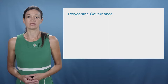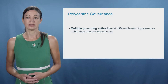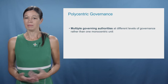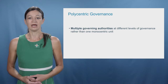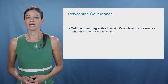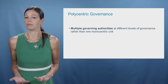This now brings us to polycentric governance. In polycentric governance, multiple governing authorities adopt their own measures addressing a certain problem. Many environmental problems can be addressed to achieve local benefits in addition to global ones. For example, reducing local air pollution. In such a case, the logic that individual actors don't have an incentive to address collective problems does not apply anymore.